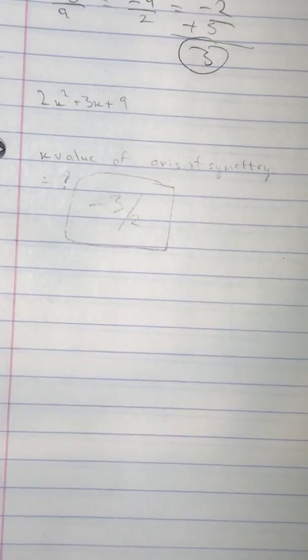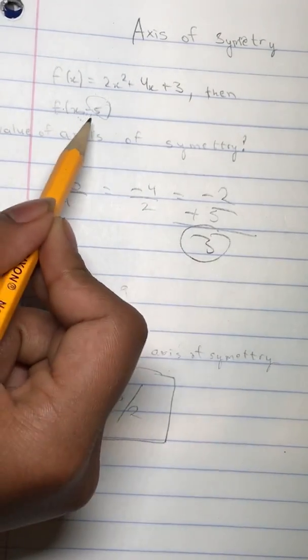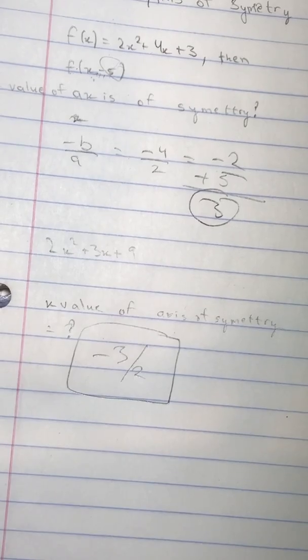Basically you just need to do negative B over A and do the opposite of what it tells you, and you're done. That's it. Good luck with this trick and I hope you do well.